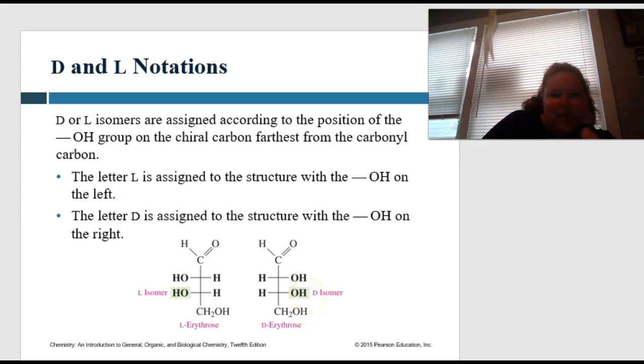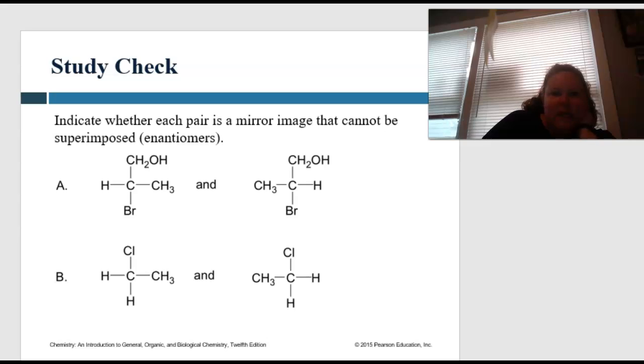All right, so let's try to apply this again. Indicate which pair has the mirror image that cannot be superimposed. Okay, so pause me and come back. All right, so for A, we say that, yes, they can be superimposed. If I put a mirror right here, that's going to be completely the same. Where if this one, I put a mirror in front of it, it is not going to be completely the same.